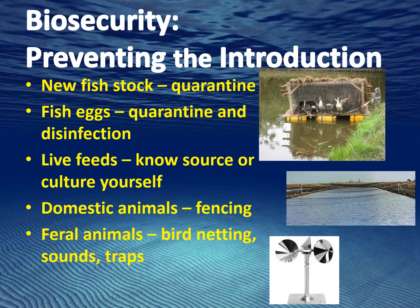Live feeds such as brine shrimp and Moina are often used to feed fish. Acquire live feeds through a reputable dealer, or even better, culture them yourself. Keep domestic animals away from the system with barriers such as fencing. Wild animals can transfer pathogens by entering your system through the water, biological filtration, or fish. Some animals can carry zoonotic pathogens that can pass to humans. Have precautions in place such as netting, noisemakers, or shiny streamers to discourage birds. Use traps for rats and snails.